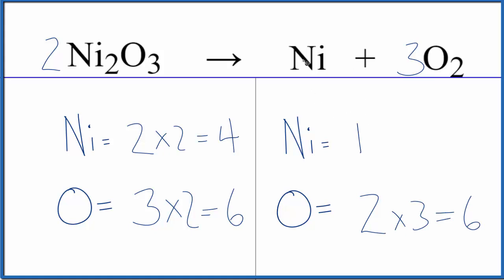And we have one nickel, so we need four. Let's just put a four as our coefficient here. One times four, that equals four, and we're done. This equation is balanced.